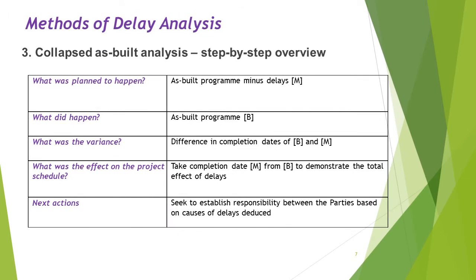Now, Collapsed As-Built analysis. What was planned to happen? That is the as-built program minus delays, M. What did happen? What actually happened was the as-built program, B. What was the variance? The difference in completion dates of B and M. What was the effect on the project schedule? We take the completion date M from as-built program B to demonstrate the total effect of delays. Next action: seek to establish responsibility between the parties based on the delays actually deduced.